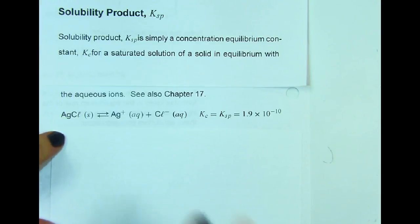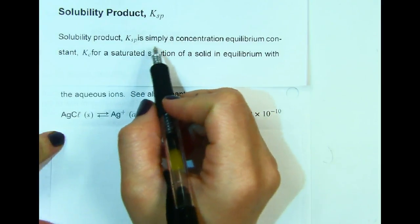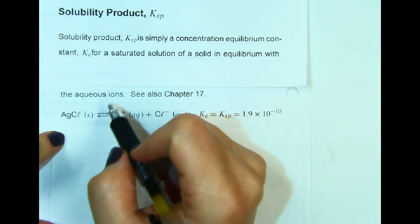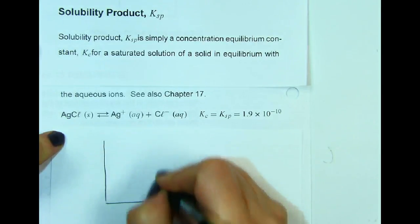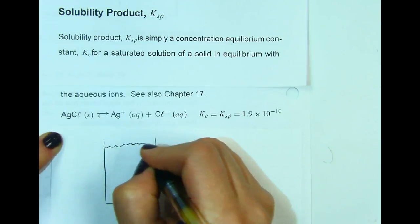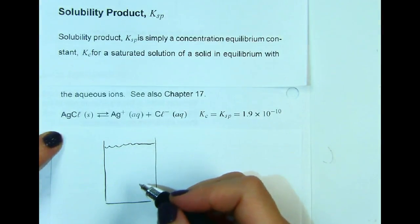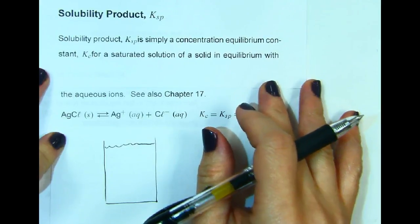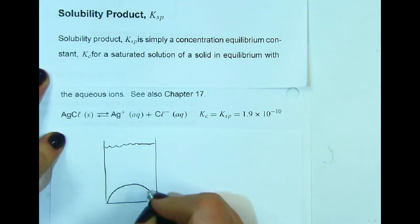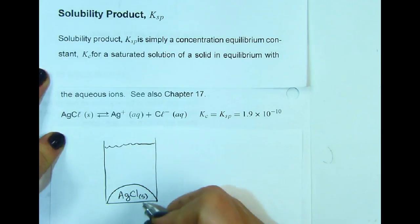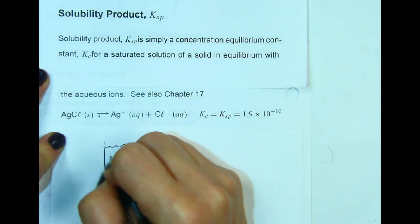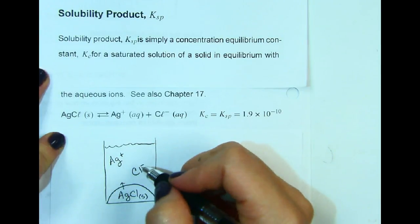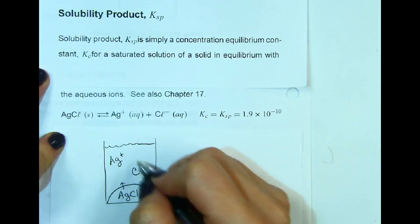A solubility product, which uses the equilibrium constant Ksp, is a concentration equilibrium constant — it's a Kc for a saturated solution of a solid in equilibrium with its aqueous ions. For example, silver chloride solid is considered insoluble, but actually everything is soluble to some degree. It reaches saturation very quickly, so you end up with solid AgCl at the bottom, but some ions do dissolve, giving us silver plus and chloride minus ions.